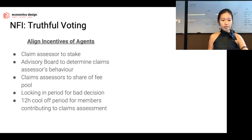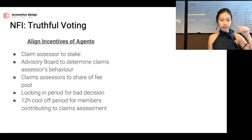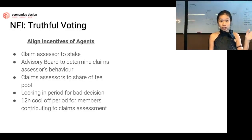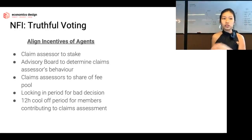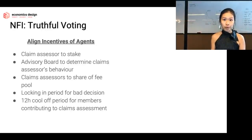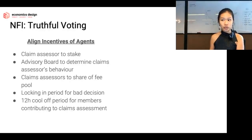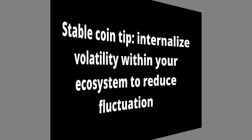If you're making a good decision as a claim assessor, you get a share of the fee — some extra tokens as a reward. If you behave badly, your tokens will be locked up for a while so you can't use them, but you still have them — like a punishment to incentivize good behavior. If you behave fraudulently, actually cheating, then your tokens will be burnt.